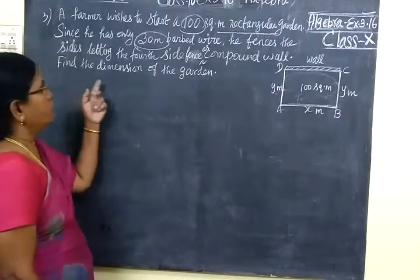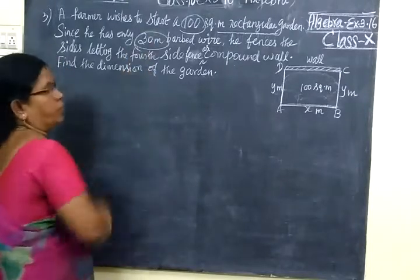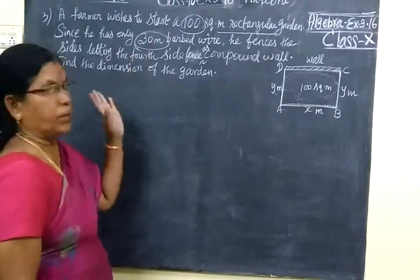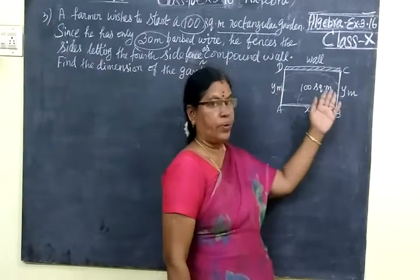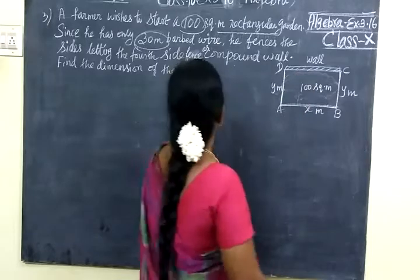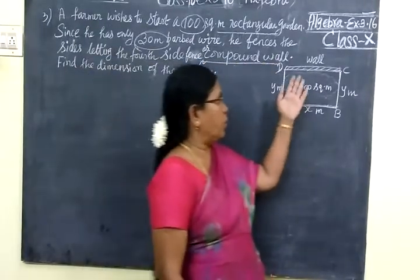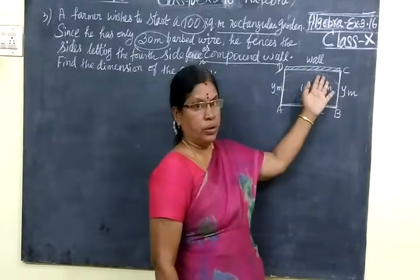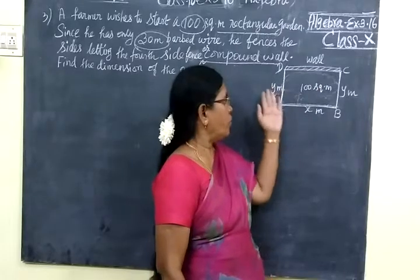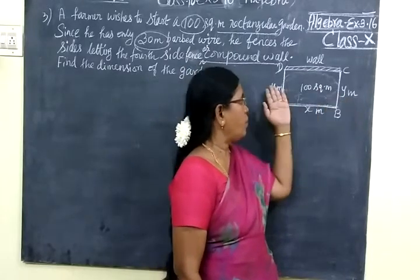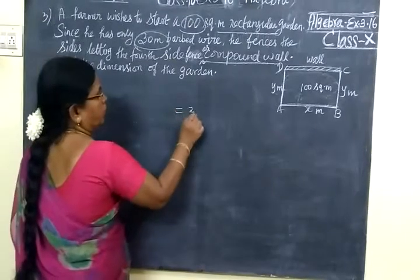Then he wants to put the fencing using 30 meter curved wire. 30 meter wire is there. He wants to put the fencing and treat both sides as a compound wall. Compound wall in this and the household compound wall is treated as the fourth side. So for these three sides, the sum of the three sides is equal to 30 meter.